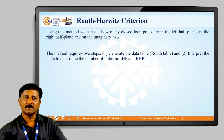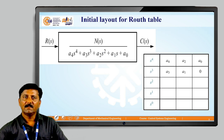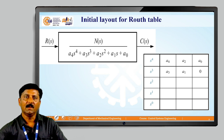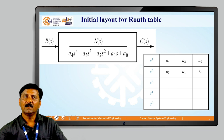The Routh-Hurwitz criterion defines stability by preparing a particular type of data table in a systematic manner. This method requires two steps: first, generate the data table called the Routh table; second, interpret the table to determine the number of poles in the left half and right half of the S plane. The transfer function C of S by R of S is a numerator polynomial divided by a denominator polynomial, and the denominator defines the poles of the closed loop system.